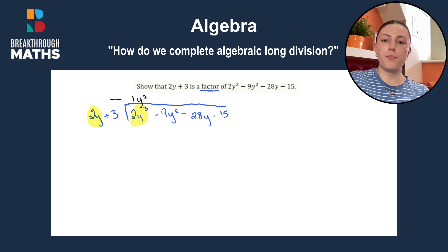Then what we have to do is multiply the 1y squared by the 2y and then by 3. So 1y squared by 2y, 2 by 1 is 2, y by y squared is y cubed, then 3 by 1 is plus 3 by y squared. Okay, we draw a line under, that's that part done and then we change the signs. So 2y cubed minus 2y cubed is 0 and then we have minus 9y squared minus 3y squared which gives us minus 12y squared and we bring down our next term.